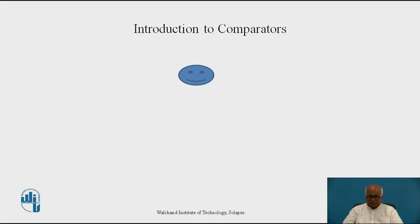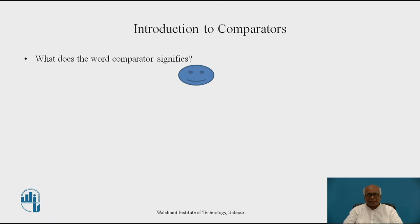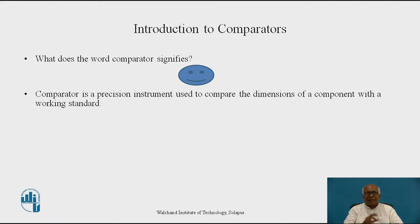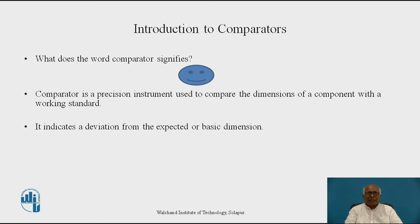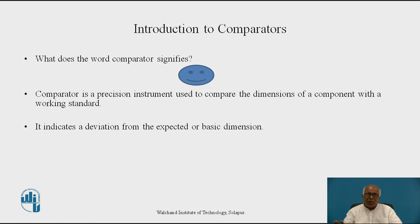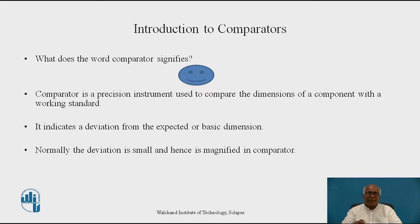Introduction to Comparators. What do you understand by the word comparator? A comparator is an instrument which is used to compare the dimension of a component with a working standard. It basically compares with the standard and measures the deviation. So it indicates a deviation from the expected or basic dimension, which is set in the form of some standard. The comparator will not give the direct value of the dimension, but will measure the deviation from it.